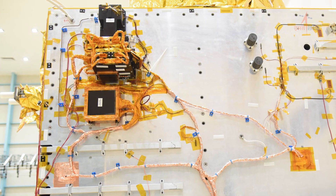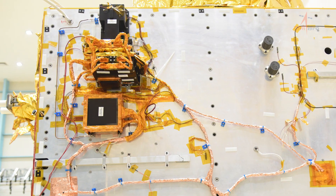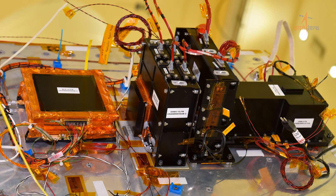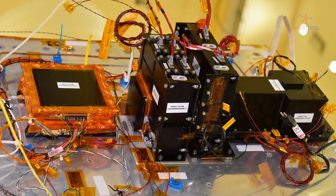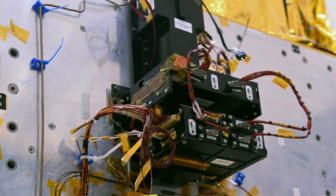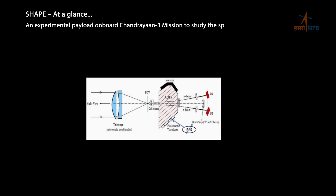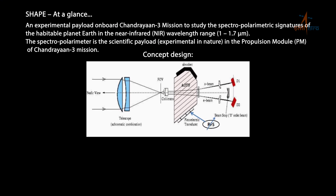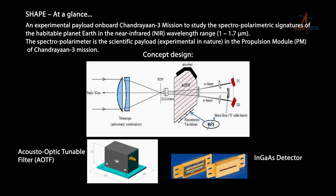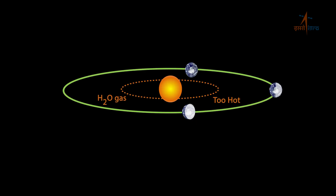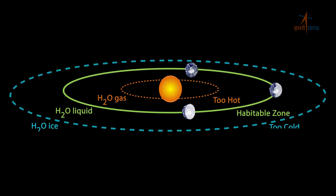One experimental scientific payload, namely the SHAPE payload, has been added as a value addition, and the science data from this payload is planned to be obtained through the S-band telemetry data link. SHAPE will help in understanding the nature and characteristics of water-rich planets through disk-integrated broadband spectroscopy and polarimetry of Earth, and will help in future studies of potentially habitable exoplanets.